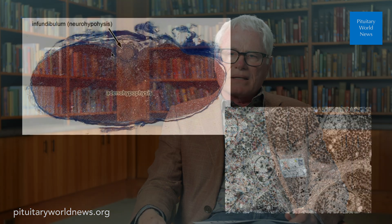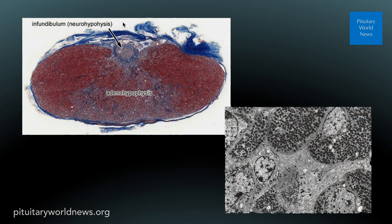Next we'll talk about the pituitary gland itself. This is a microscopic section through the pituitary gland. You can see it's bean shaped. This is part of the stalk and the upper part of the posterior pituitary. This is the adeno-hypophysis or anterior pituitary, the glandular part of this organ, composed of a number of different cells. This is an electron microscopic view of the cells of the pituitary gland. You can see the nuclei, and all these little black dots are secretory granules — little packets of hormone produced by the individual pituitary cells.